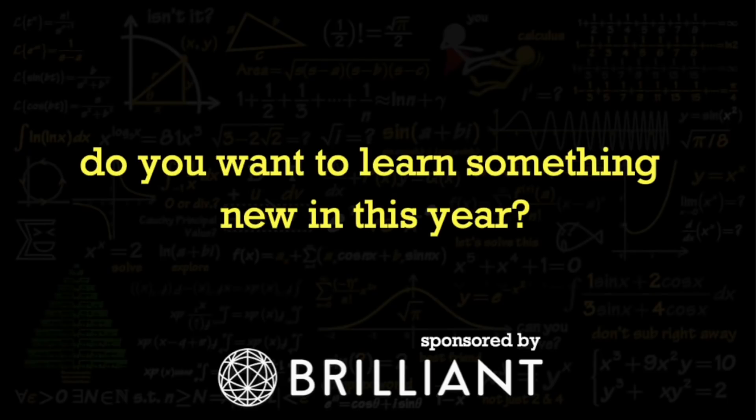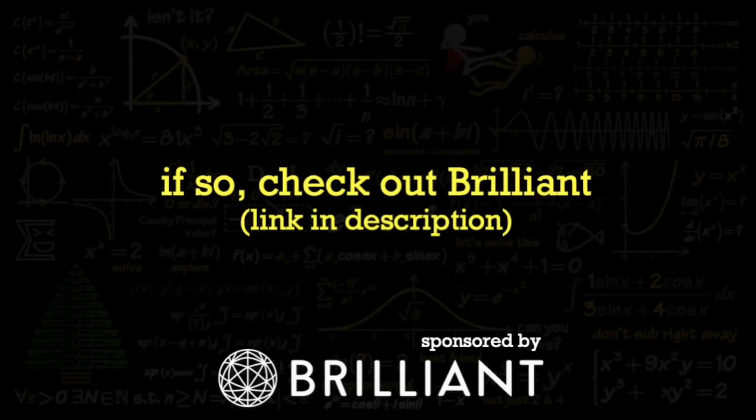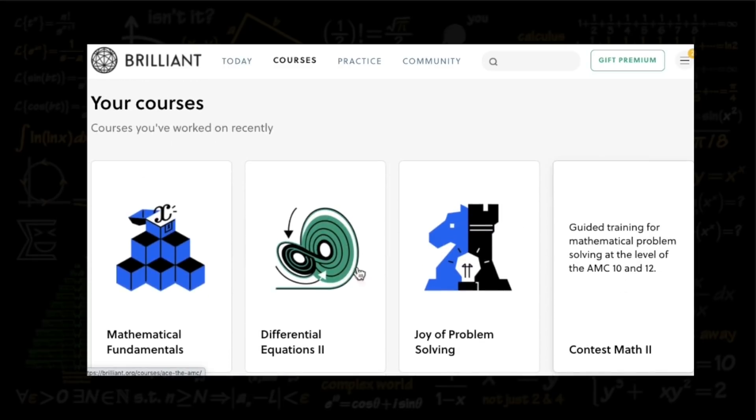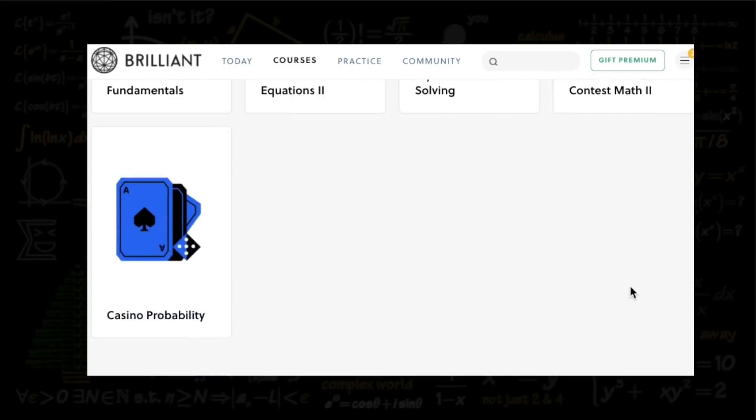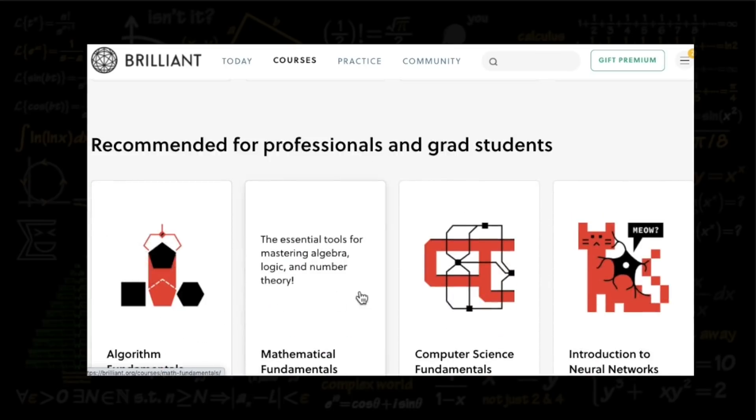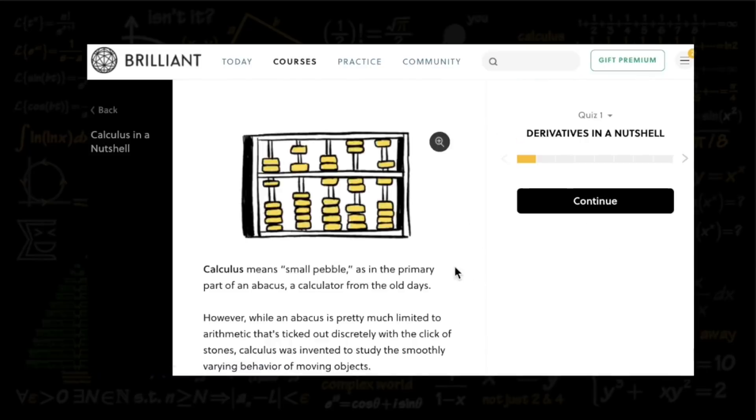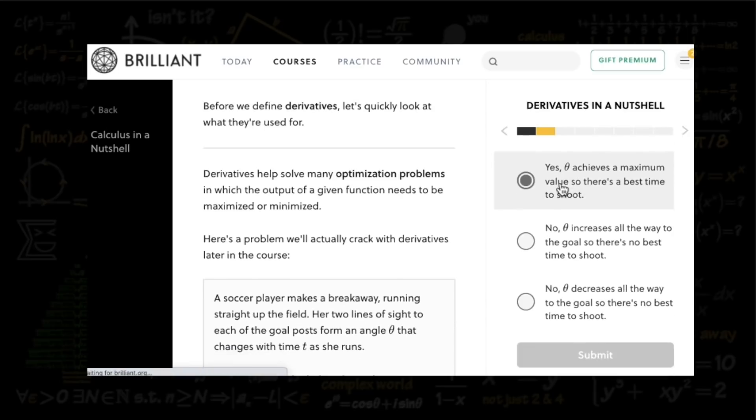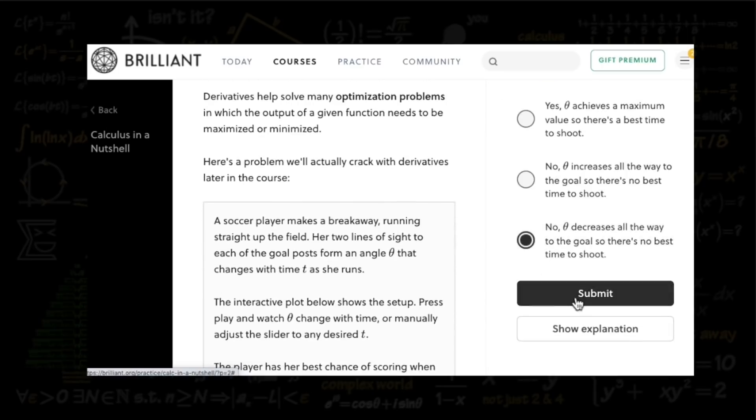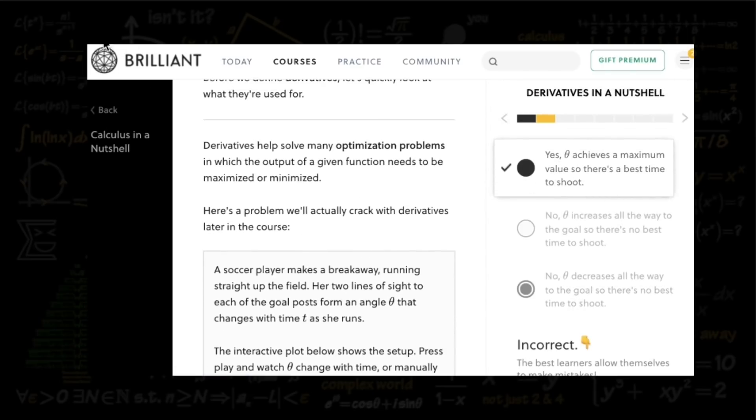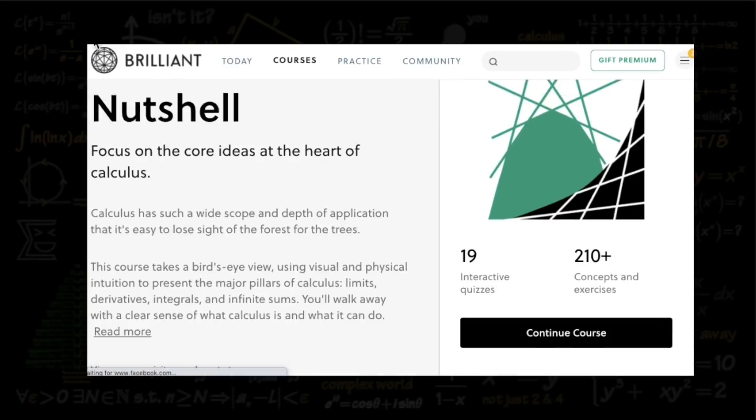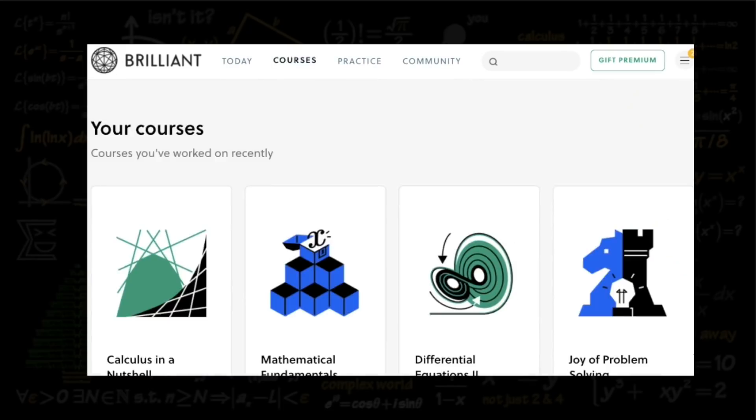Do you want to know something new this year? If so, then check out Brilliant. It's a website and an app that makes learning interactive, accessible, and fun. Their approach is based on problem solving and active learning. It's about seeing the concepts visually and interacting with them so the concepts stick with you. Their courses are laid out like a story and broken down into pieces so that you can tackle them a bit at a time.